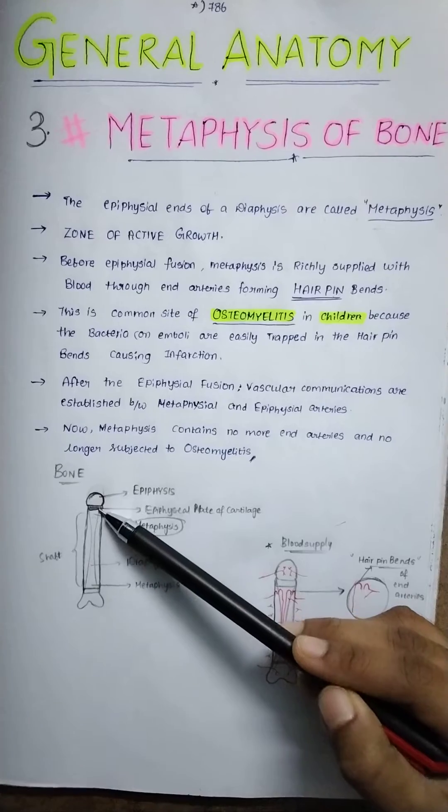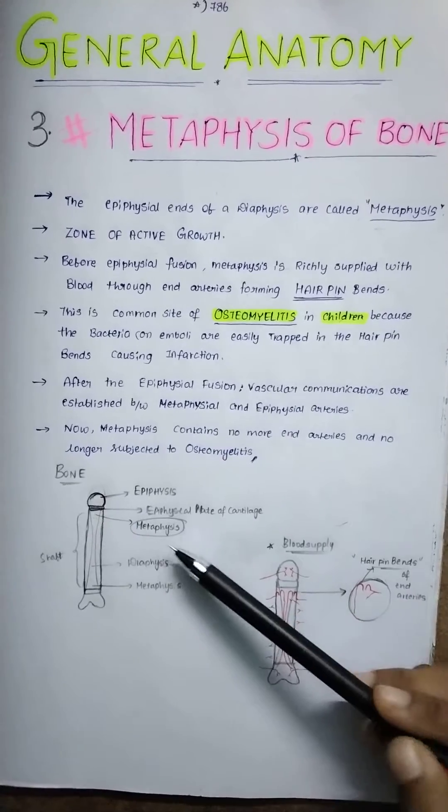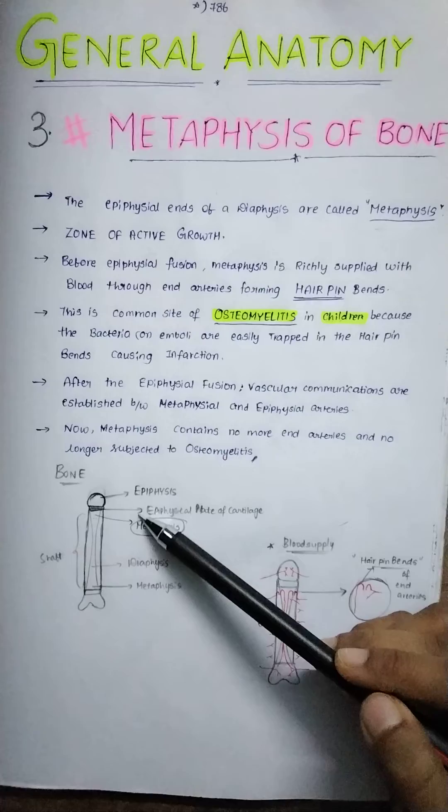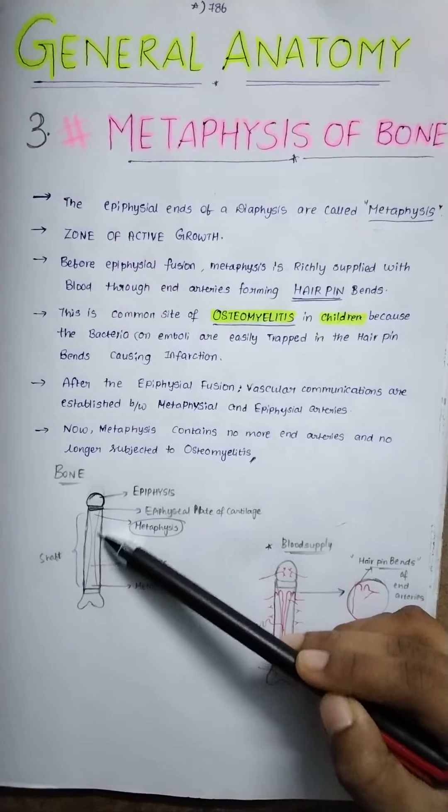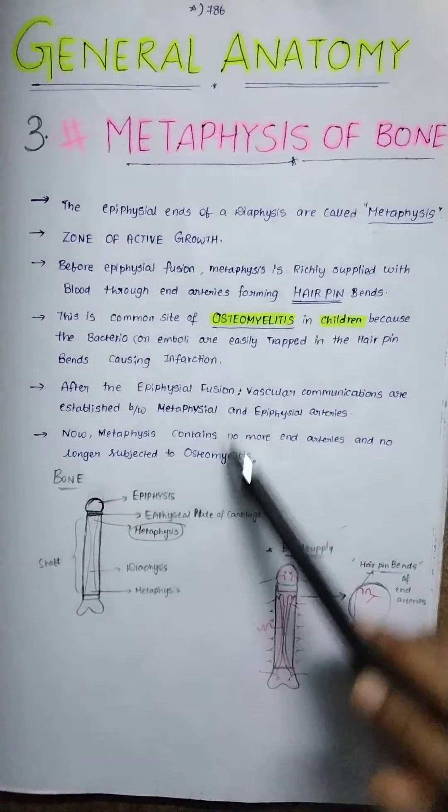So we have the epiphysis, epiphysial plate of cartilage. Just below this is the metaphysis, our point of focus. This is the metaphysis, and then this whole portion is called diaphysis.